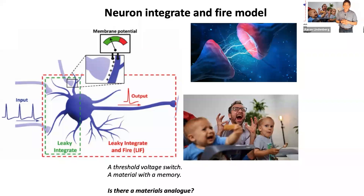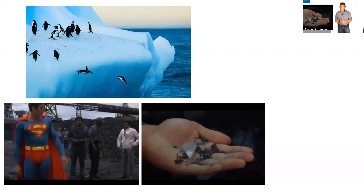A threshold voltage switch — and in many ways, another way of thinking about this is that this is sort of like a material with a memory. The neuron is able to count the number of pulses that came in. It's not just looking instantaneously at what's coming in — this neuron knows that nine other action potential pulses have already arrived. Now here's the tenth one, and it's crossed the threshold and it's going to fire. Can we find materials that in some way mimic this behavior? We can. To explain how this works, I first have to tell you about the properties of phase transitions in materials.